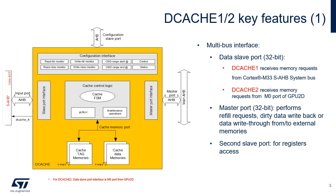The multibus interface minimizes potential conflicts regarding memory traffic. The 32-bit data slave port receives instruction and data memory requests from the Cortex-M33 SAHB system bus for DCache1 and from the M0 port of GPU2D for DCache2. The 32-bit master port performs refill of missing requests from memories, dirty data write-back, or data write-through to external memories — external flash and RAMs accessed through OctoSPIs, HSPI1, and FMC controllers. The second slave port is used for registers access. When an external memory access is marked as non-cacheable by the MPU, DCache1 is bypassed and the request is forwarded unchanged to the external memory on the DCache1 master port.